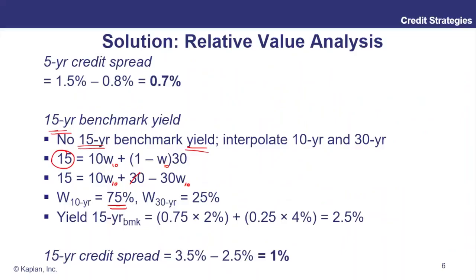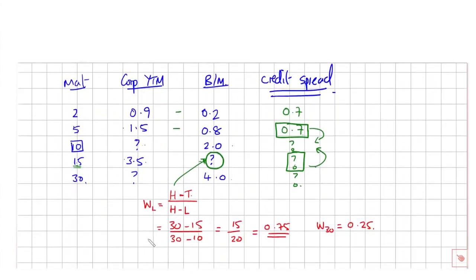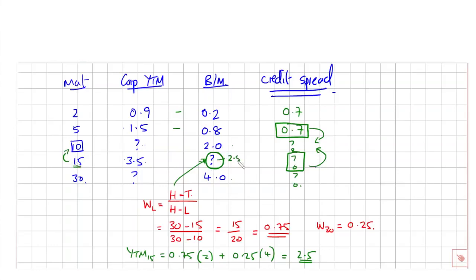So my interpolated 15-year benchmark yield is 75% in the 10-year name (yield of 2%) plus 25% in the 30-year name (yield of 4%), which comes out at 2.5%. That's closer to 2% than 4%, which makes sense because 15 is closer to 10 than to 30. Now I can get the credit spread for the 15-year: 3.5 minus 2.5 equals 1. The 5-year credit spread we already have at 0.7.